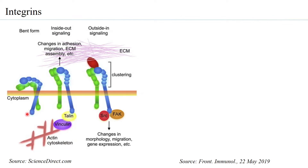When an intracellular component interacts with the integrins, vinculin and talin — which are associated with the actin cytoskeleton — can bind to the integrin molecule. Immediately there is a conformational change in the integrins: from a bent form they become an extended form, and in this extended form the integrin is able to interact with the extracellular matrix.